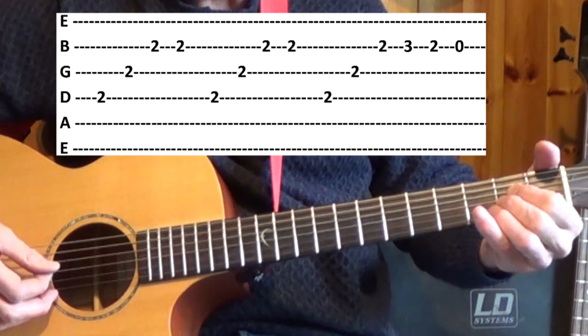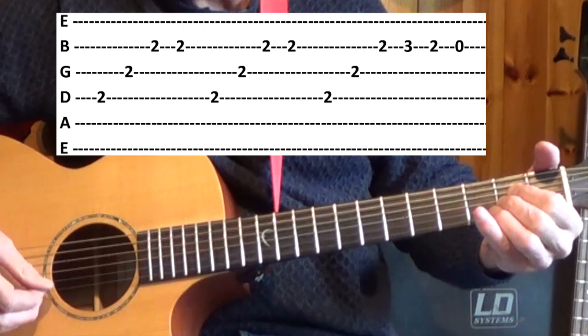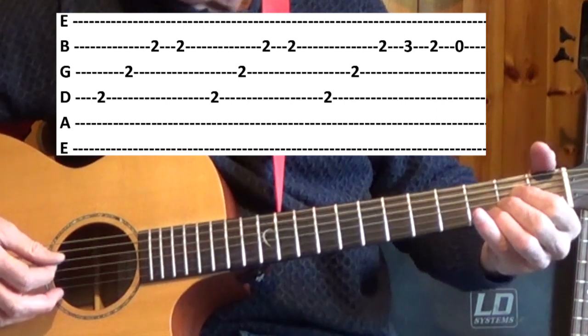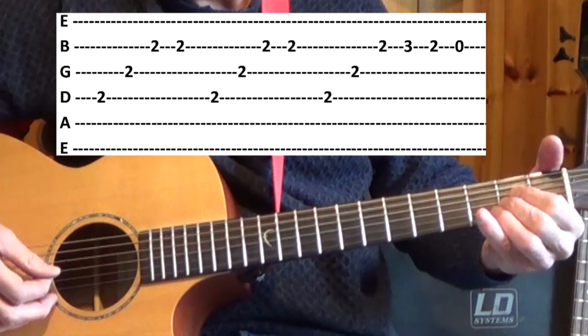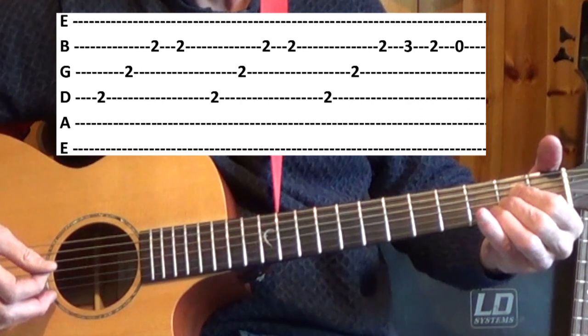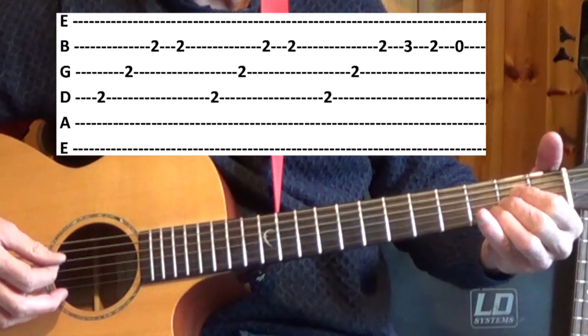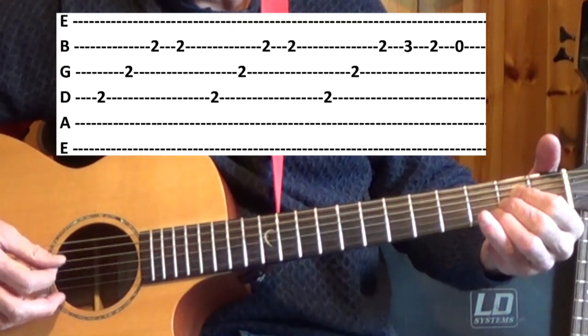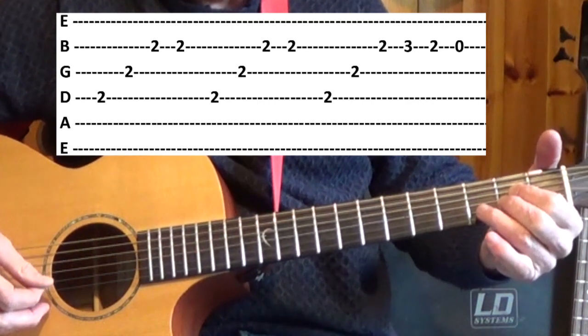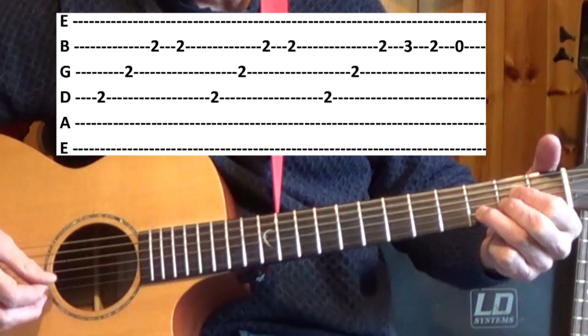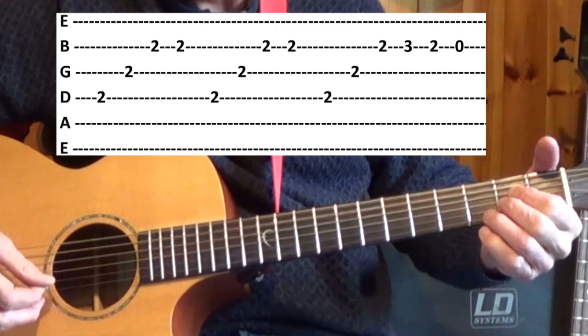So 4th string, 3rd string, 2nd string, 2nd string. And how I'm picking that is I'm running my pick down four: down, down, down, down, up. And that's repeated. And the 3rd time, now we play the 3rd fret of the 2nd string, back to the 2nd fret and open.